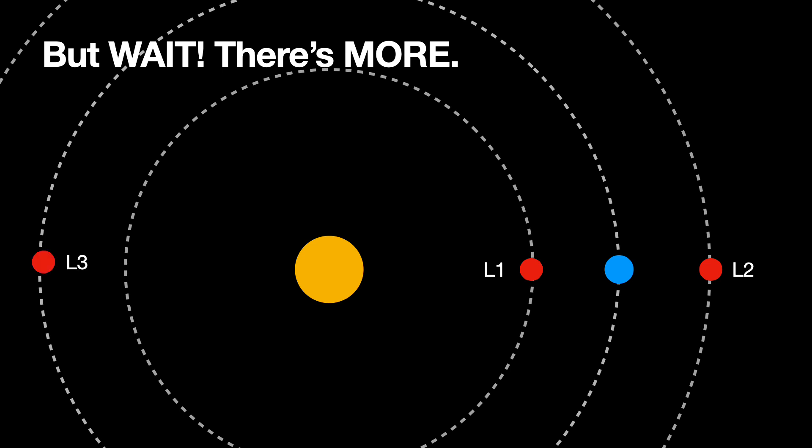There's L3, which is on the other side of the Sun. So in this case, the Earth and the Sun both pull in the same direction. Although the Earth pulls very little because it's very small, very far away.